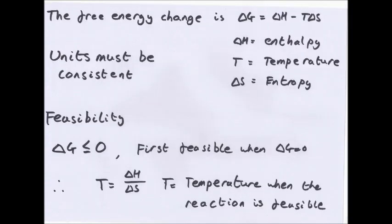Free energy change. The free energy change, which is measured as delta G, is the balance between entropy and temperature for a process. The equation, delta G equals delta H minus T delta S. Where delta G is free energy change, delta H is enthalpy, T is temperature, and delta S is entropy.